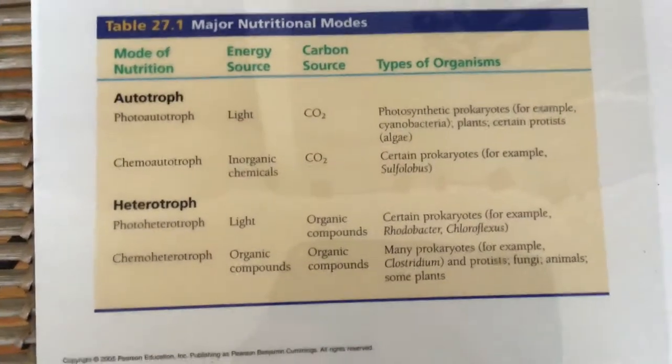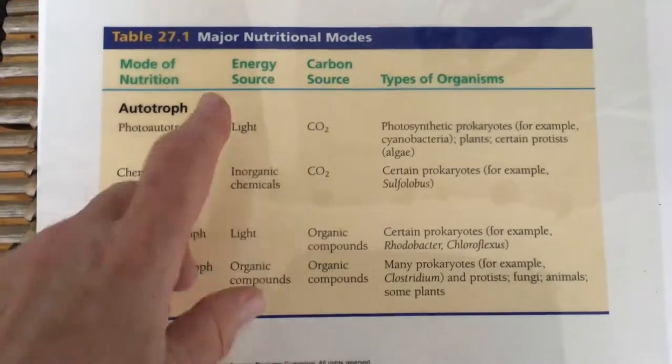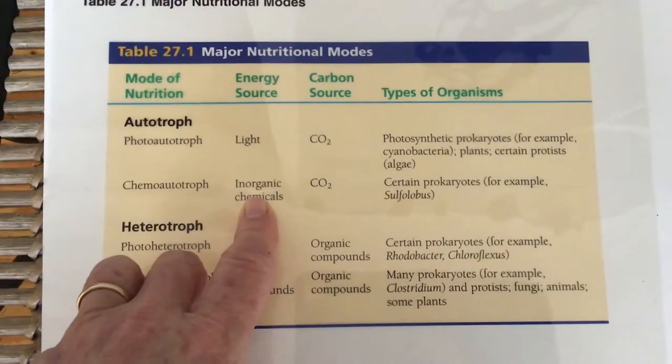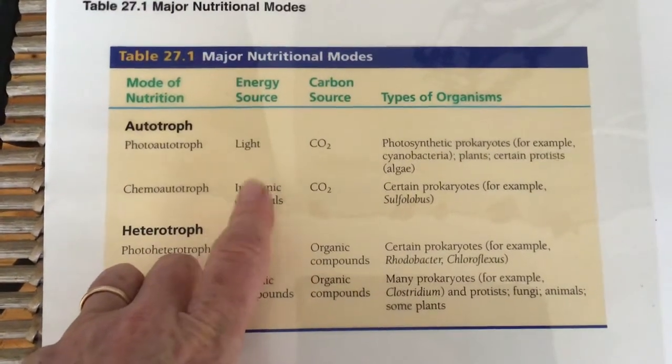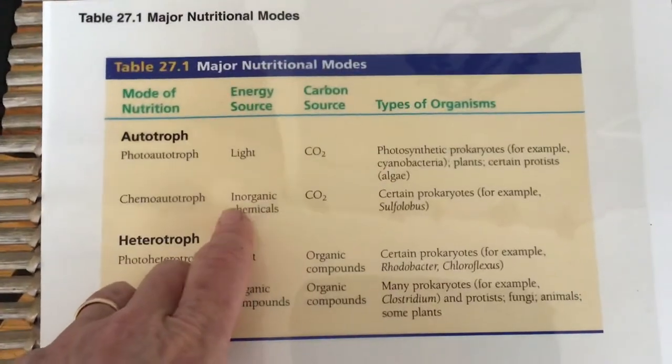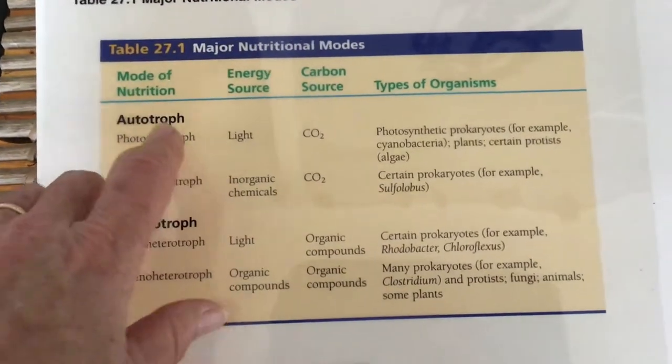Autotrophs can either use light or they can use other chemicals like hydrogen sulfide as their energy source. As those things break apart, they'll use the energy from that. These are called chemoautotrophs, otherwise they're photoautotrophs.